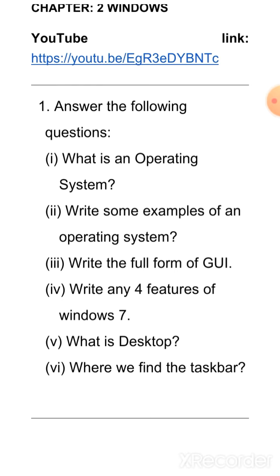The fifth question is, what is desktop? The answer is, desktop is the first screen on computer in which we can find various icons like object, shortcut icons, documents icon, etc.